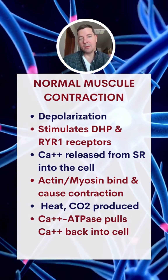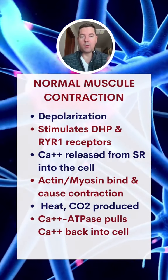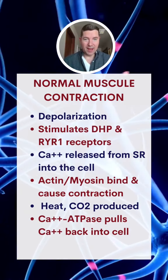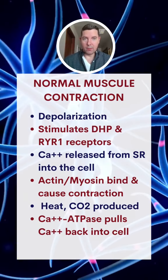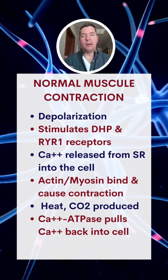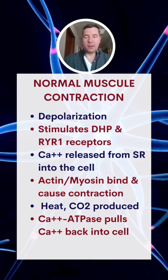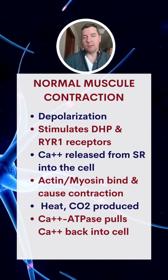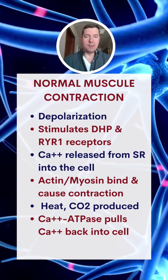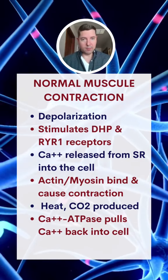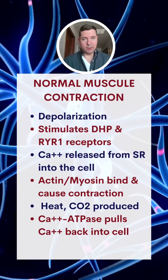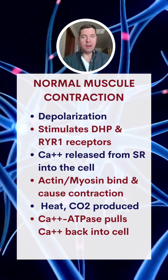What happens is that the RYR1 receptor specifically controls the outflow of calcium, which is the overall problem in malignant hyperthermia. Normally, a little bit of calcium is pushed out into the cell, and then actin-myosin bind. ATP metabolizes, producing heat, water, CO2, and energy.